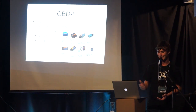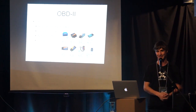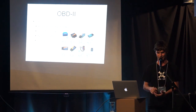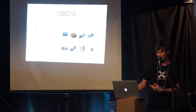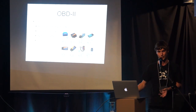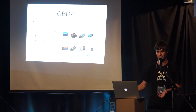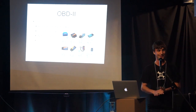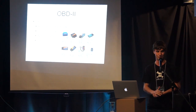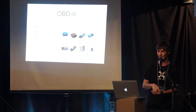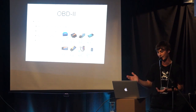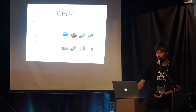These OBD2 devices are cheap — like $11 — and talk Bluetooth to your phone so you can read fault codes. They're all based on the same chip, the ELM327, which is actually made by a Canadian company that basically put their own code on a Microchip PIC. China has pretty much ripped it off over and over again. But it was a Canadian product.